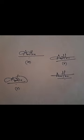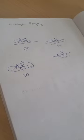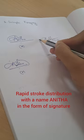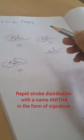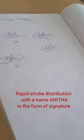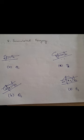Simple forgery is a fraudulent signature in which there was no apparent attempt at simulation or imitation. The forger does not try to copy a model but writes something resembling an ordinary signature. For simple forgery, the forger uses a false name and makes a rapid stroke distribution.